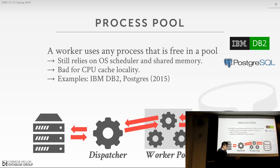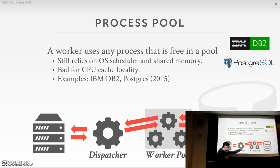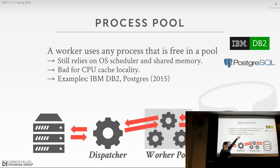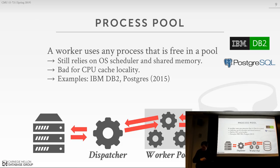For either the process-per-worker or process-pool approach, since all workers are separate processes, the OS handles scheduling — we can't do anything except give hints like setting the nice flag. DB2 actually supports all three approaches because it has essentially four different code bases: one for Linux and Windows, one for z/OS mainframe, and others, needing to support all different environments.